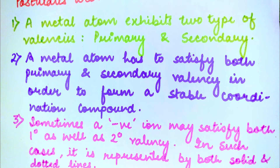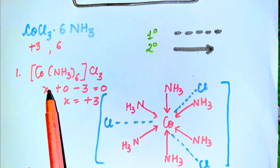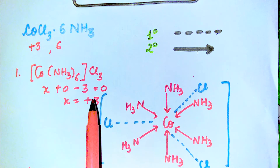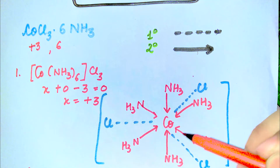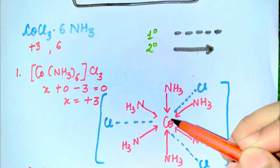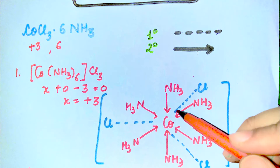Now let me show how to represent primary and secondary valency by dotted and solid lines. We are going to represent these two valencies in Tessert's compound CoCl₃·6NH₃, which has a valency of +3 and a coordination number of 6. The formula is written as [Co(NH₃)₆]Cl₃. The valency of cobalt: x + 0 − 3 = 0, so x = +3. Cobalt is in the middle and 6 ammonia molecules surround cobalt, coordinated with dative bonds, represented by solid lines. The three chlorides are represented by dotted lines, representing primary valencies.